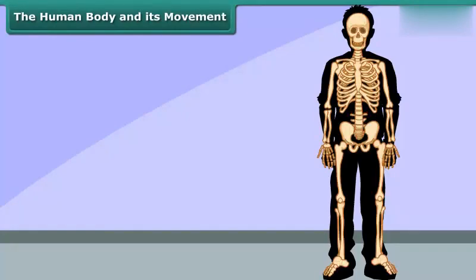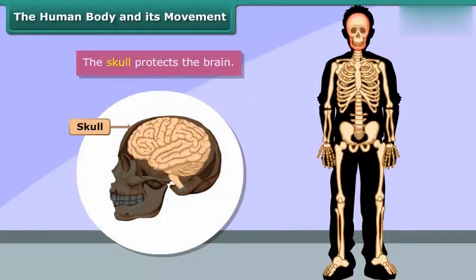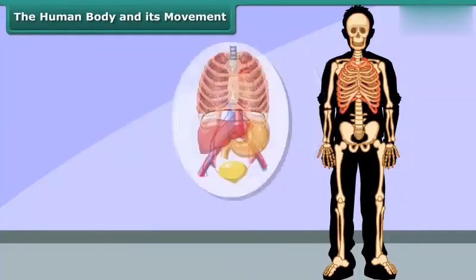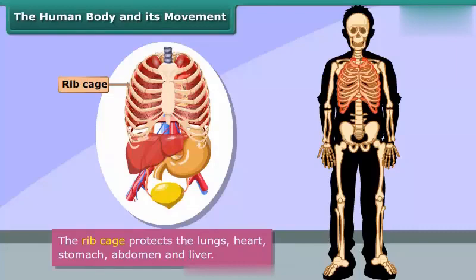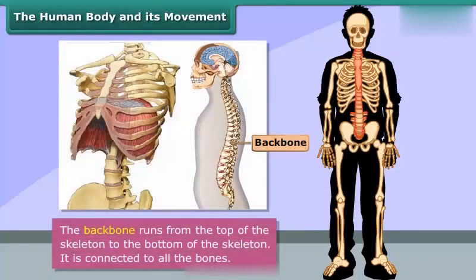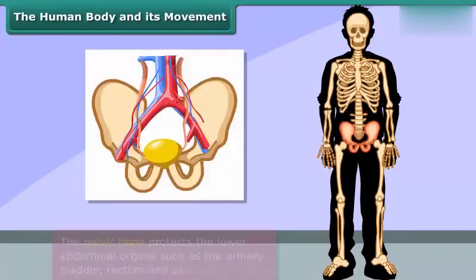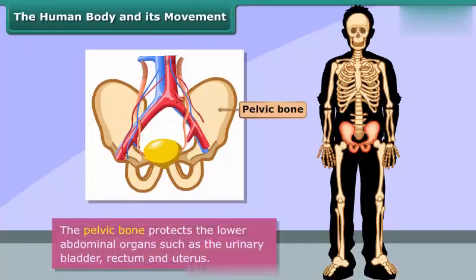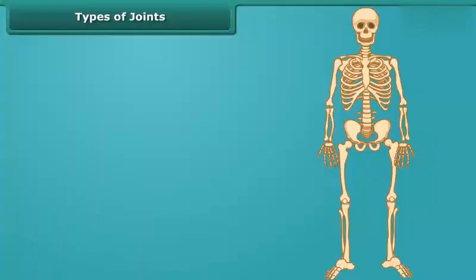Most of the bones protect our organs — the skull protects the brain, while the rib cage protects the lungs, heart, stomach, abdomen, and liver. The backbone runs from the top of the skeleton to the bottom and is connected to all the bones. The pelvic bone protects the lower abdominal organs such as the urinary bladder, rectum, and uterus.